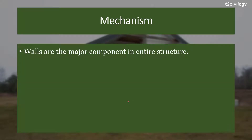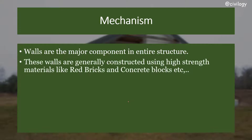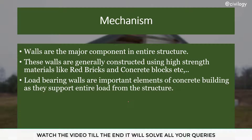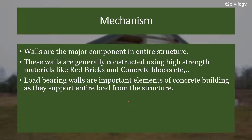Now we'll discuss the mechanism. Walls are the major component in the entire load bearing wall structure. These walls are generally constructed using high strength materials like red brick and concrete blocks. Load bearing walls are important elements of a concrete building as they support the entire load from the structure — the top load comes to the walls and is transferred to the ground through the foundation.